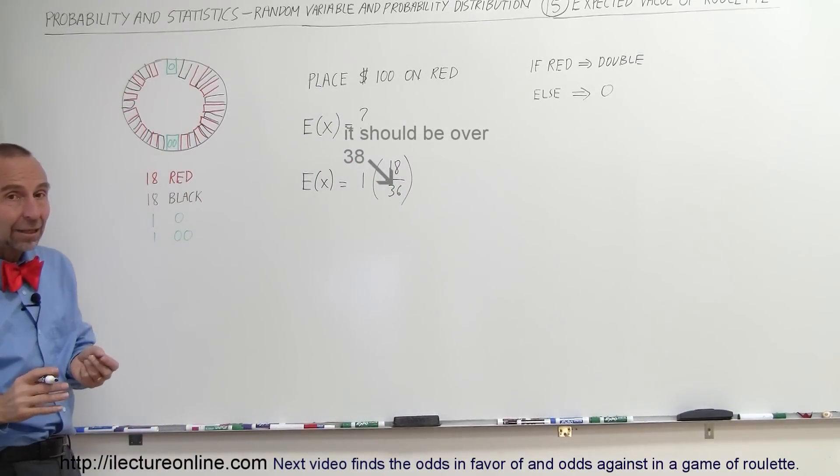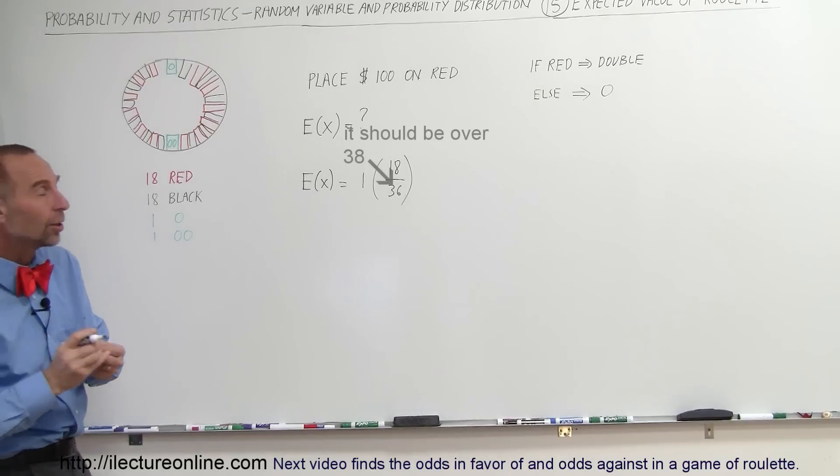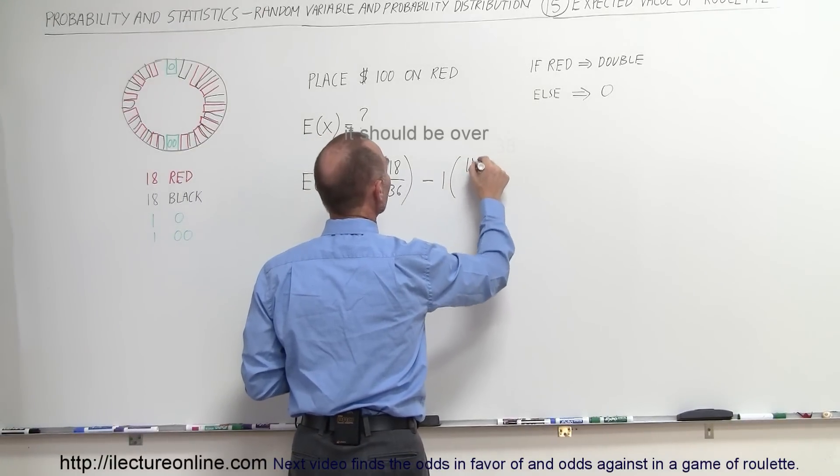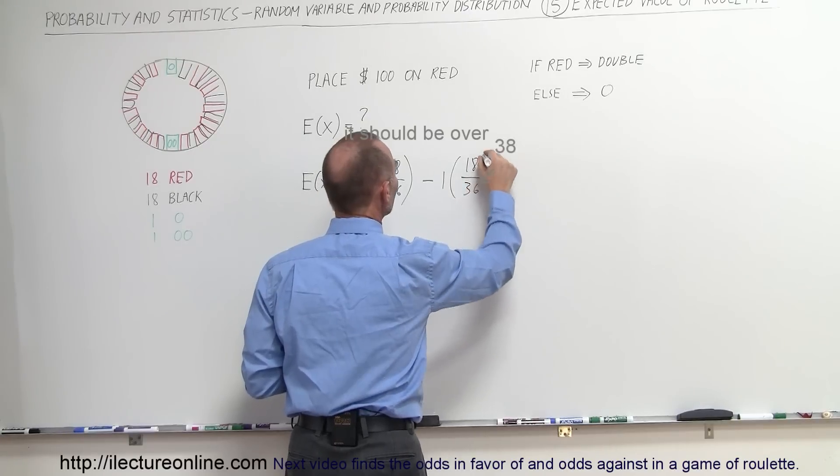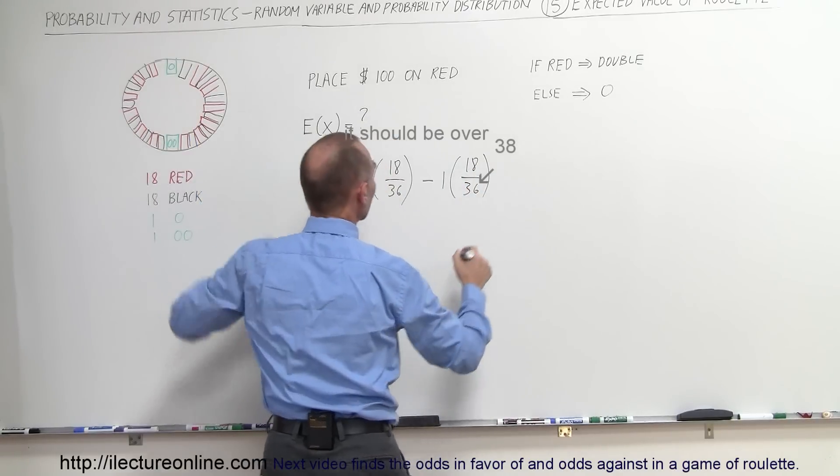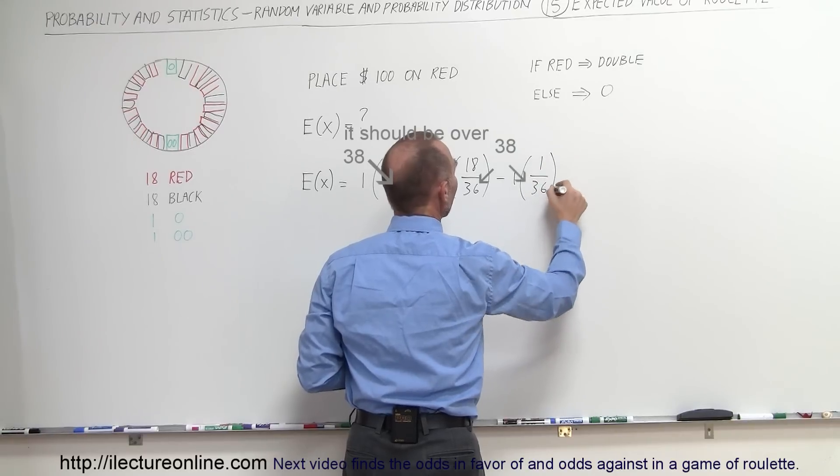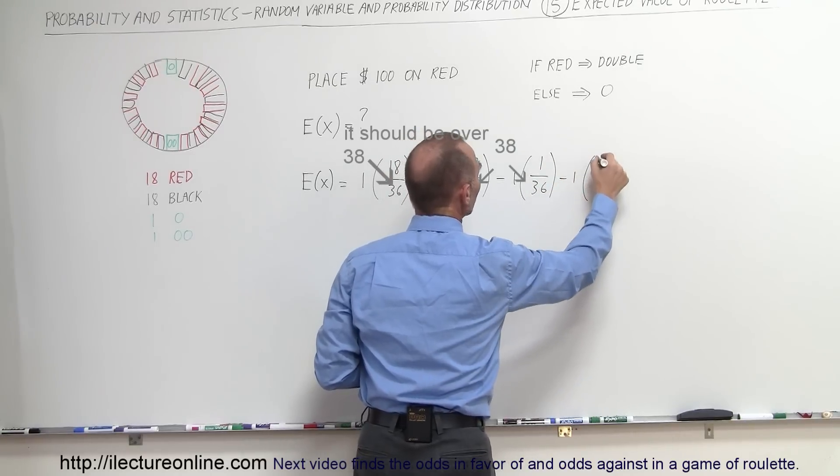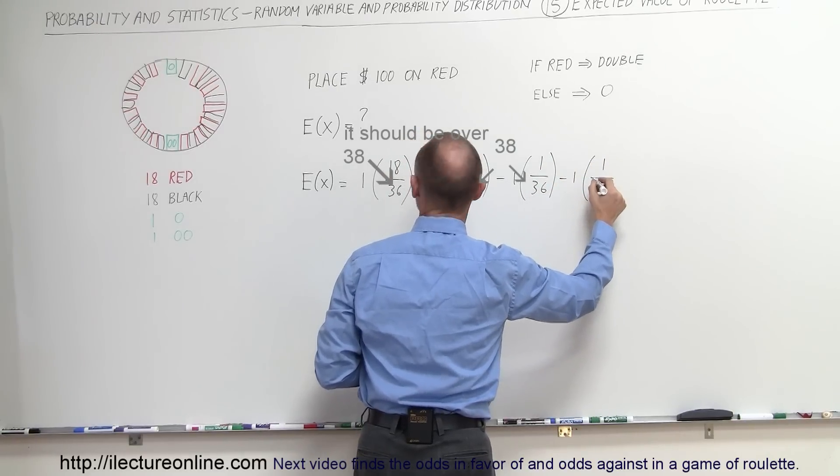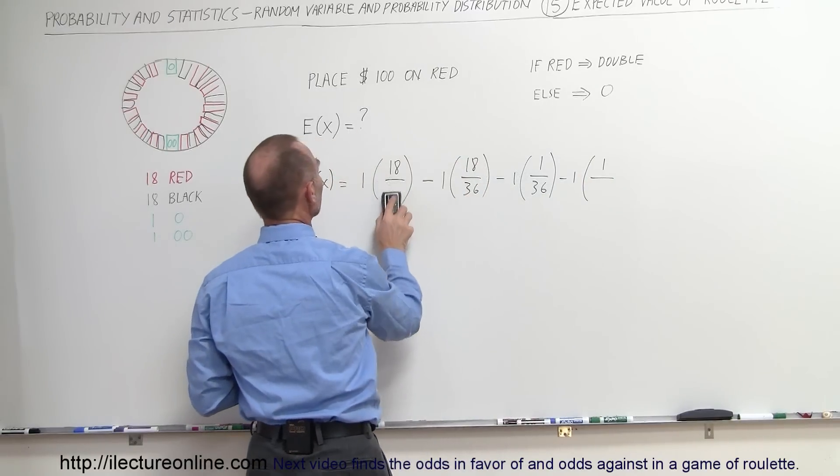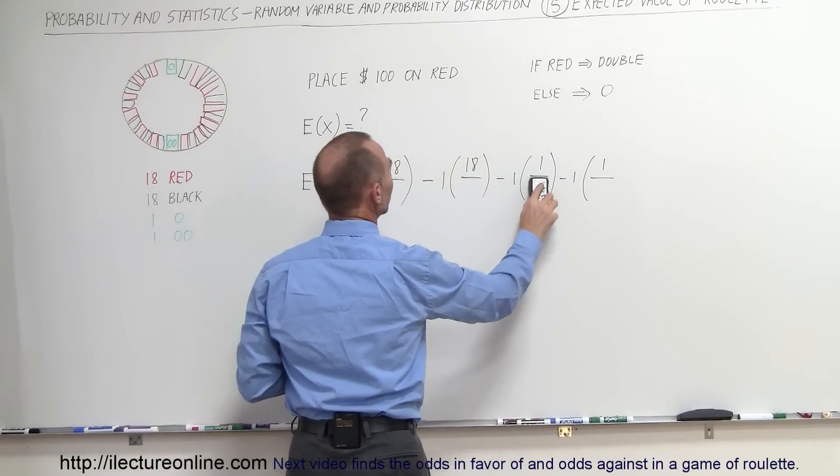But if it lands on black you will not get anything, that will take your dollar away so to speak. So it will be minus 1 and there's 18 black squares out of total of 36. If it lands on the single green you will also lose your money, there's one of those. And if you land on double green you also will lose your money and there is, let's see here, no there's not 36, there's 38.